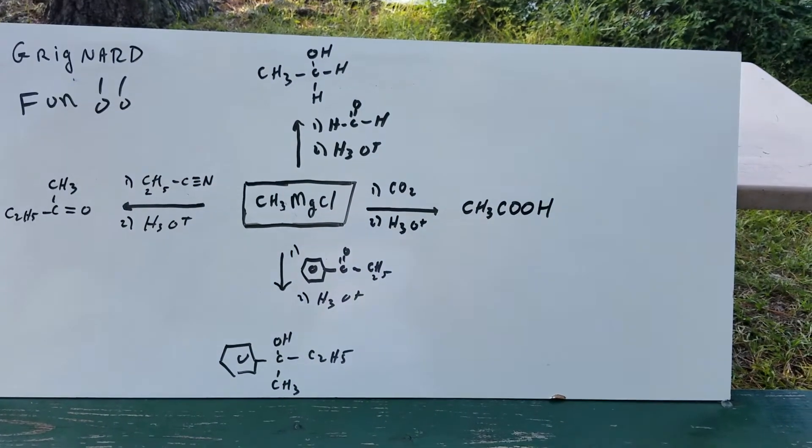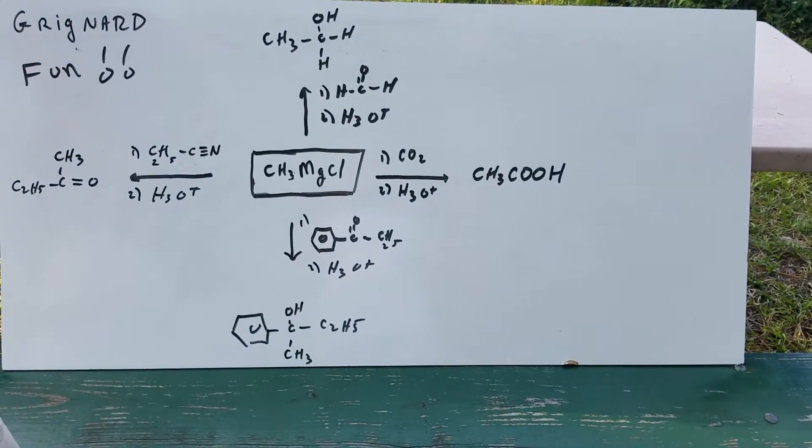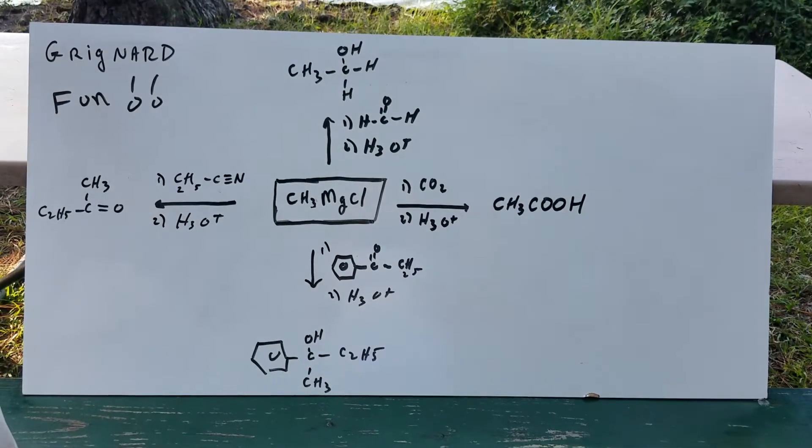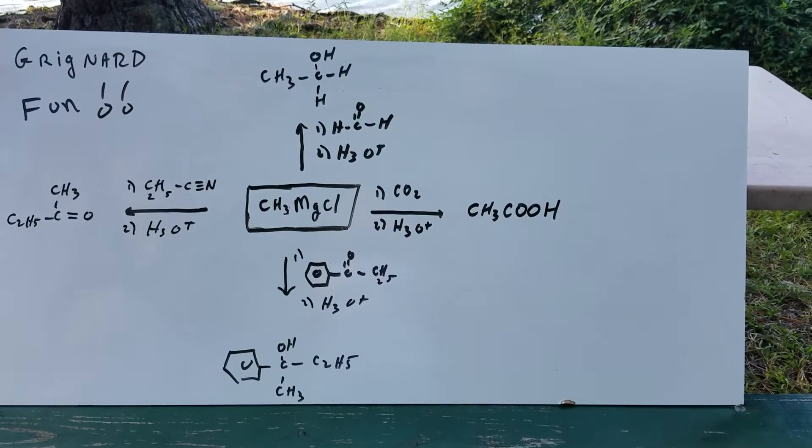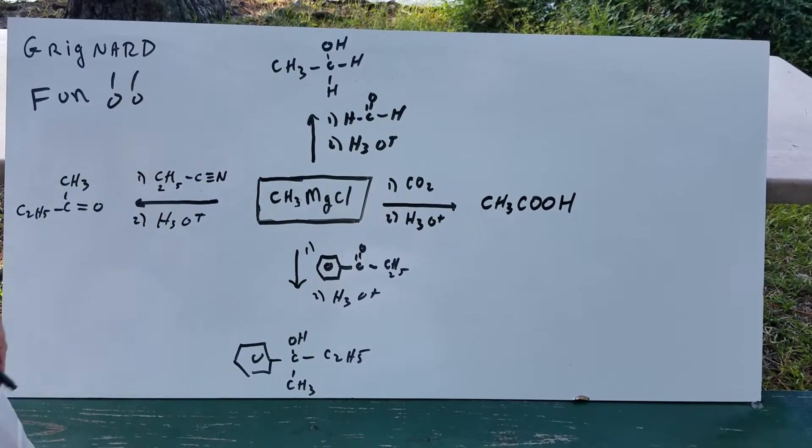So as you can see, where the MgCl was, you put on a COOH group. And that's called carbonation of a Grignard. So it allows me to take a Grignard and build a carboxylic acid out of it with one additional carbon.